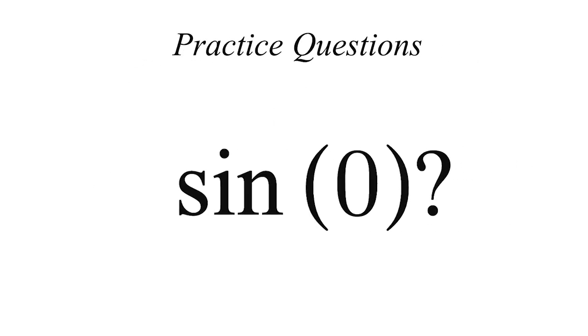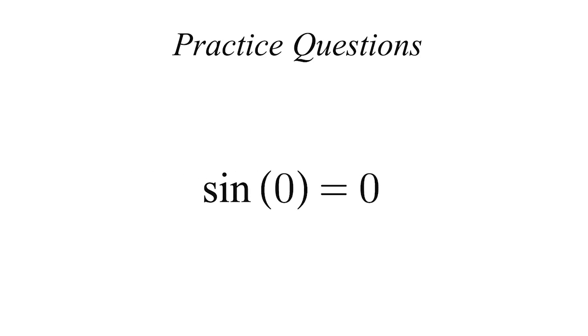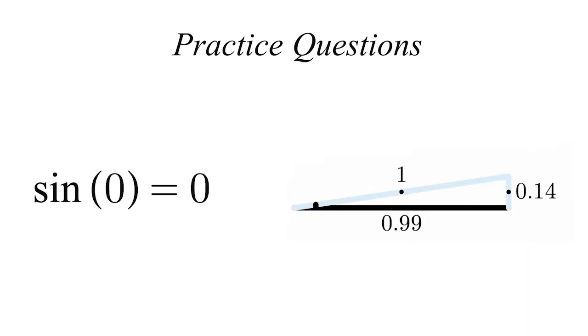Let's dive into some practice questions using our ratios. What is the ratio of sine 0 degrees? Inputting this into your calculator, you should find that sine 0 is equal to 0. This makes sense, since at 0 degrees, the opposite will be 0 units long, while the hypotenuse is 1 unit long.